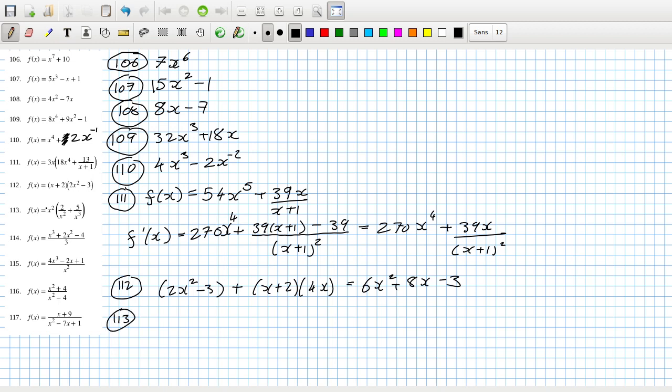113, x squared goes in, that's a 2, that's gone. That's 5 over x, so that becomes minus 5x power minus 2.